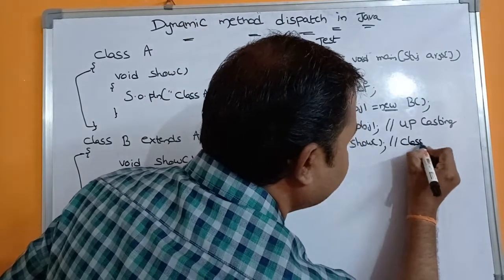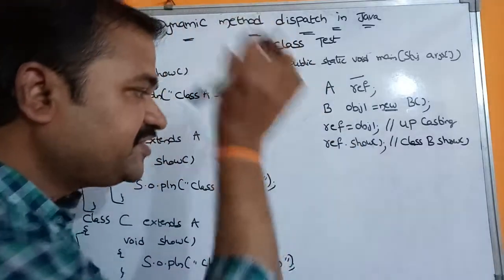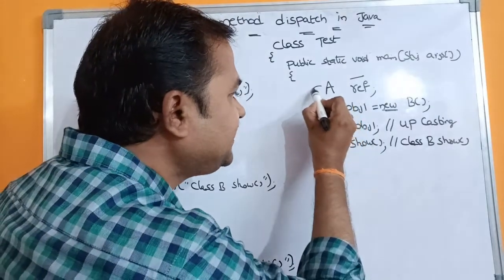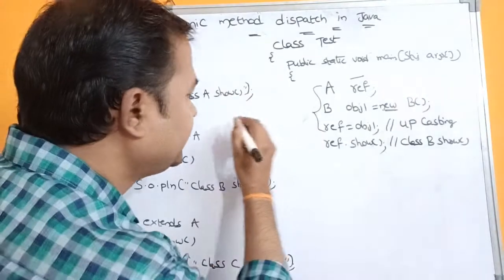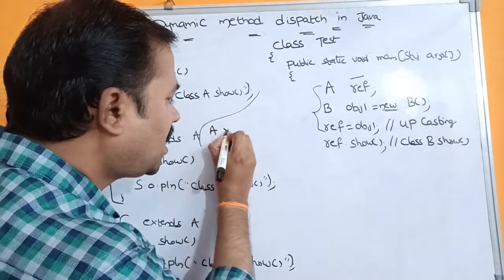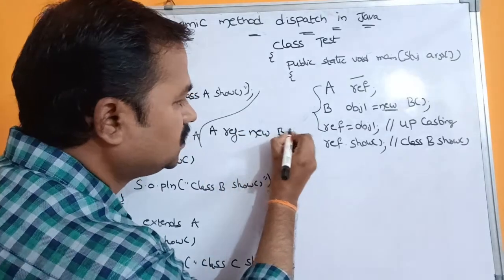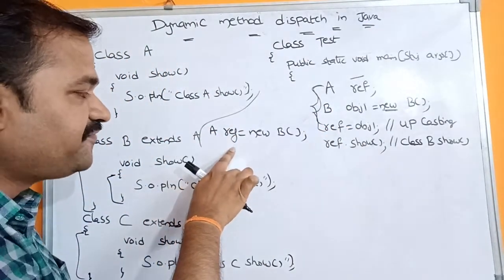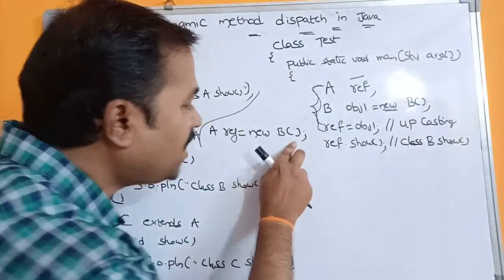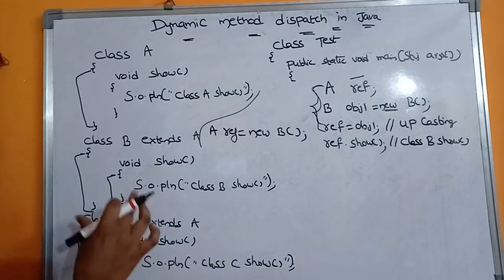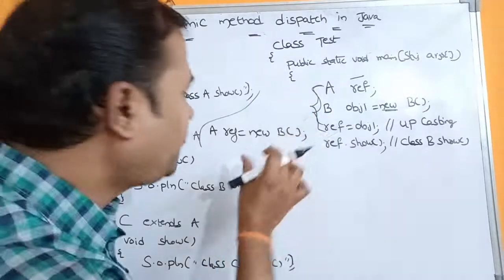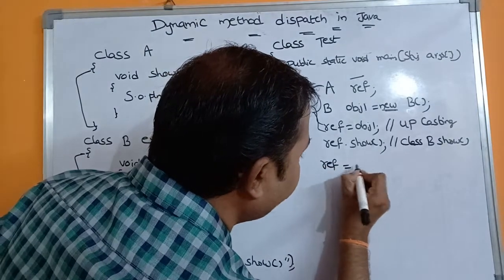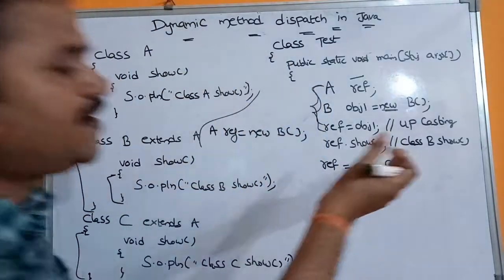Since our reference contains obj1, which is a class B object, the class B show method is called and "Class B show" is printed on the monitor. This decision about which show method to call is decided during execution time. We can also combine the three statements into a single statement: A REF = new B(), then call REF.show().